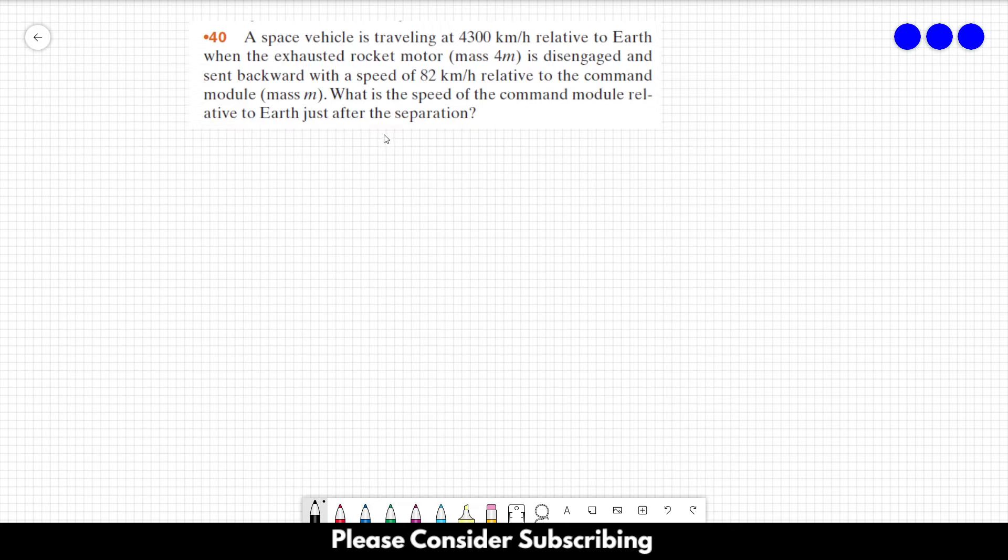A space vehicle is traveling at 4,300 kilometers per hour relative to Earth when the exhausted rocket motor, which has mass equal to 4m, is disengaged and sent backwards with a speed of 82 kilometers per hour relative to the command module which has mass m. What is the speed of the command module relative to Earth just after this separation?